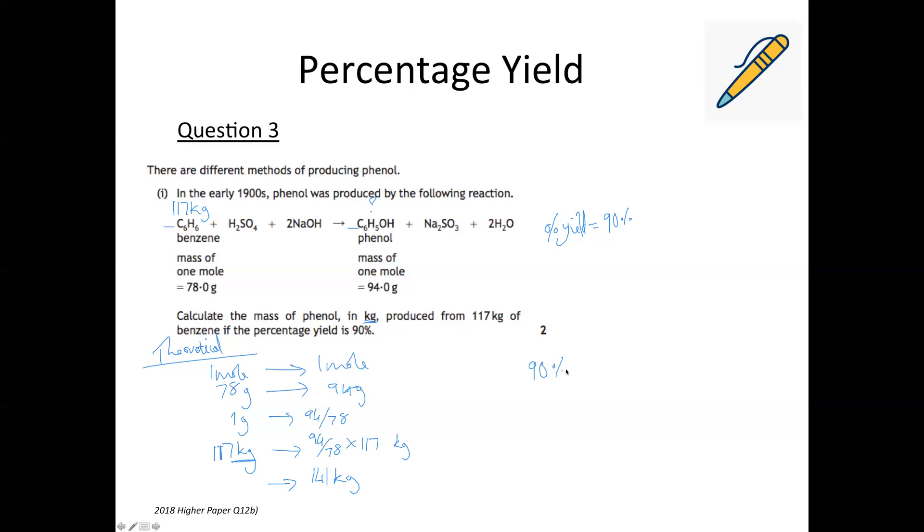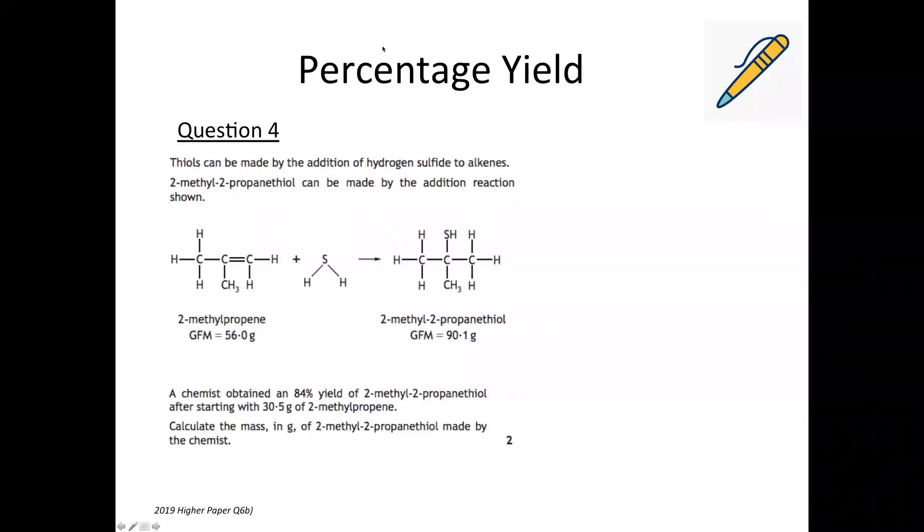So if that's our theoretical yield, our actual yield is 90% of that. So now we're just really needing to find 90% of 141 kilograms. So you might have different ways of finding percentages. I do it by dividing the percentage by 100 to convert it into a decimal. So 0.9 times 141 is 126.9 kilograms. So that's our actual yield because it's 90% of the theoretical yield.